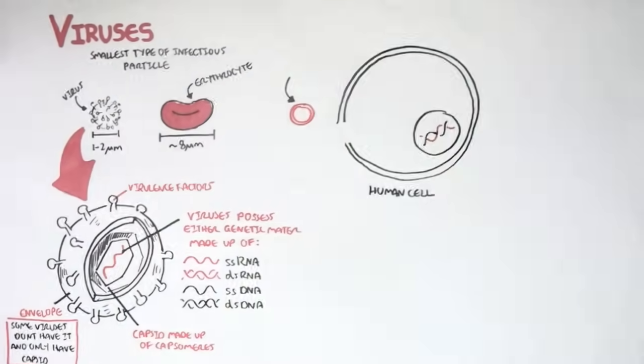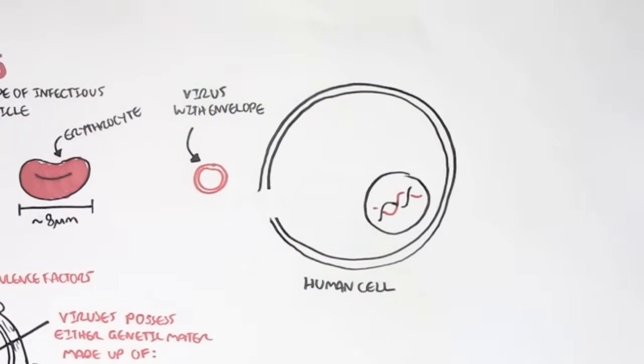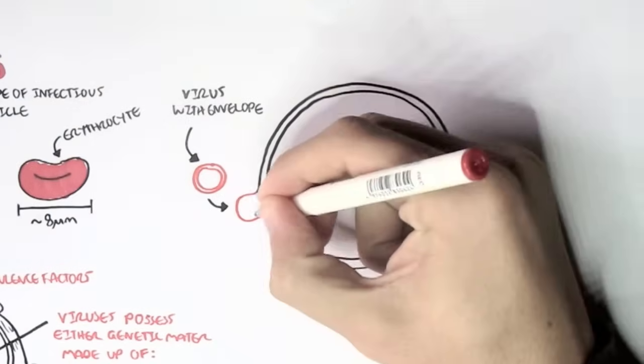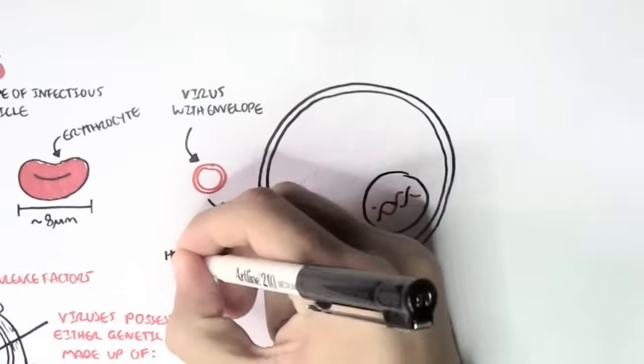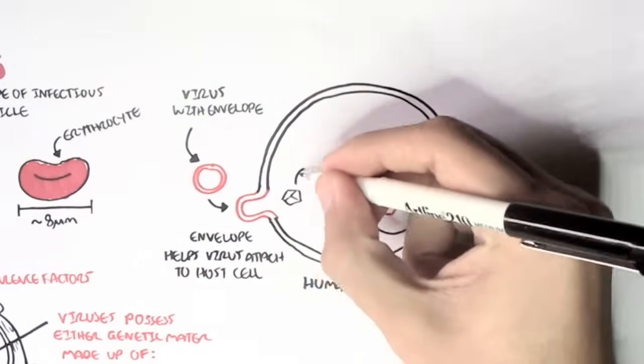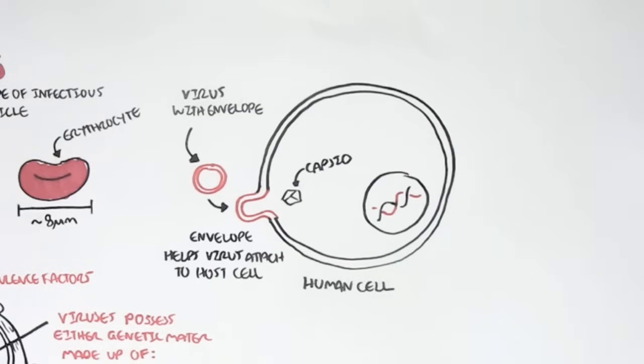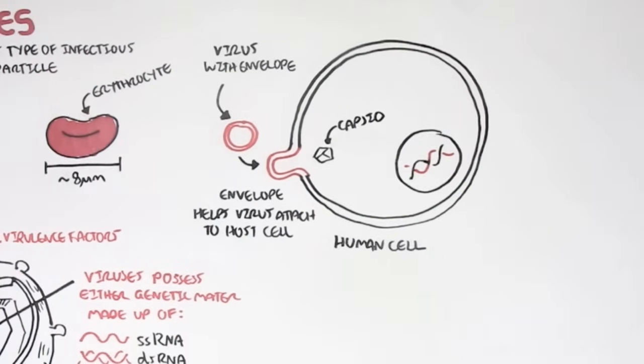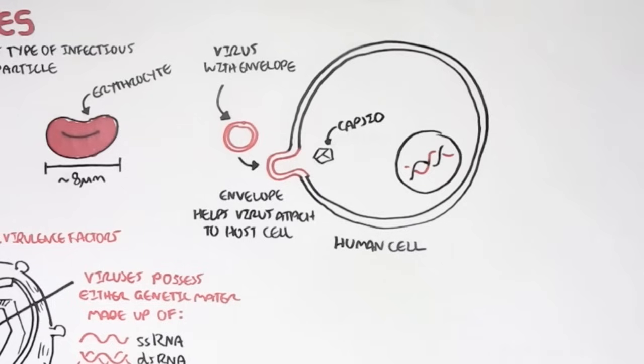A human cell is also made up of a lipid bilayer. So if a virus would come along, they can fuse their envelope with the host cell, releasing the capsid or genetic material inside the cell, like shown here. So we can say that the envelope helps viruses attach to host cells.